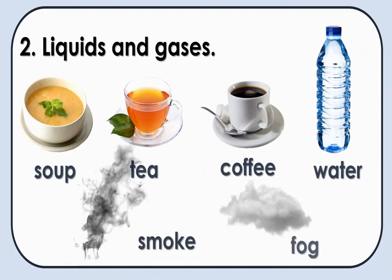Second one: liquids and gases. Here you can see some liquids and gases — they come under uncountable nouns. Soup: one cup of soup, we cannot count it. And one cup of tea, one cup of coffee, and one bottle of water. Are you able to count this? No. So we call them uncountable nouns. Down you can see smoke and foam — gases. It comes under uncountable nouns because we cannot count them. They are called uncountable nouns.